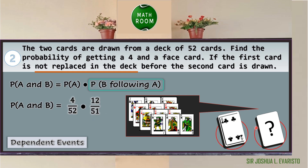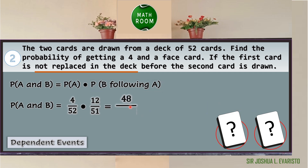The denominator is 51 since we already picked the four of clubs without replacement. Now, 4 × 12 = 48, and 52 × 51 = 2652. We can simplify 48/2652 by dividing both numerator and denominator by 12, giving 4/221. Therefore, the probability of getting a four and a face card is 4 over 221.